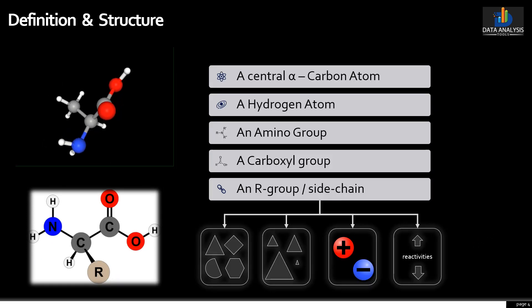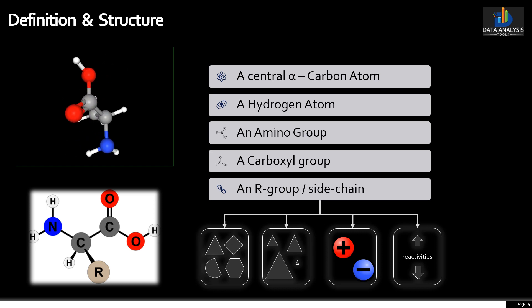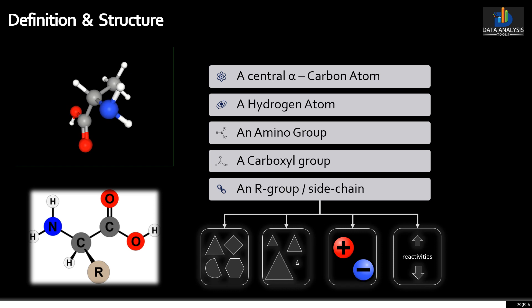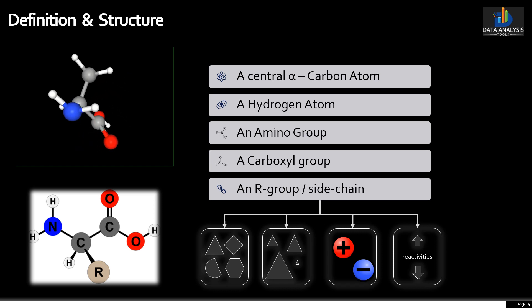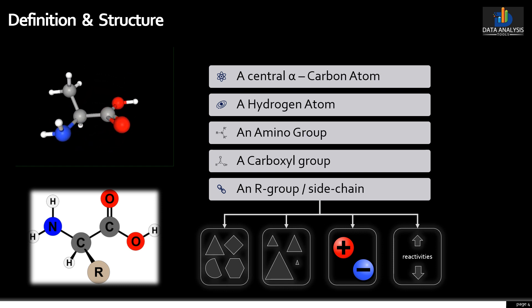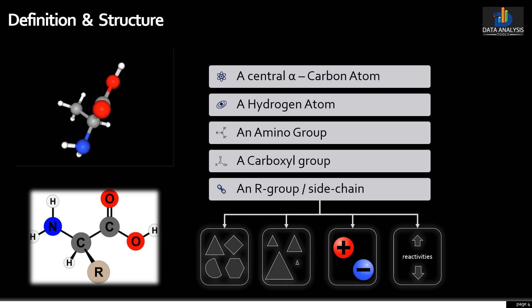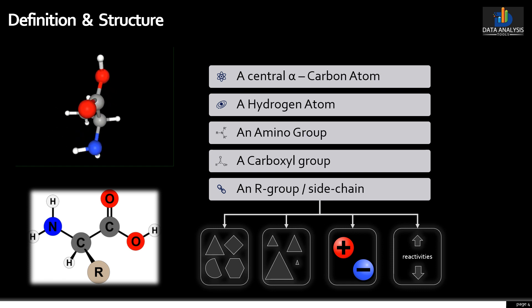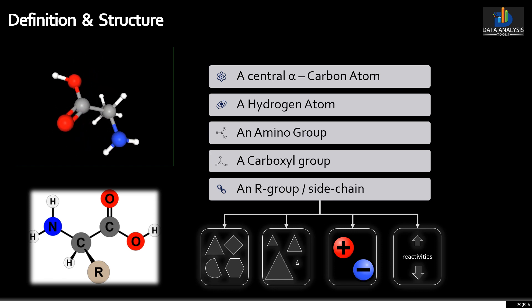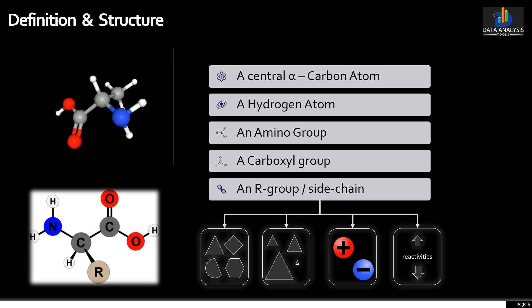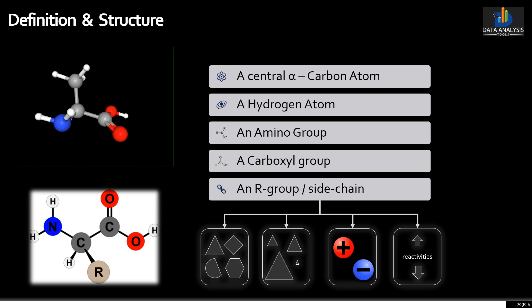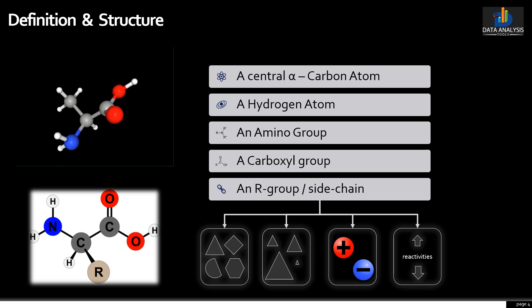As a definition, we can say an amino acid is an organic compound that contains both an amino group (NH2) and a carboxyl group (COOH) bound to the same alpha carbon. They are readily made from simple molecules by adding energy. The common molecules they are made up of are carbon, oxygen, hydrogen, nitrogen, and in some cases, sulfur atoms.